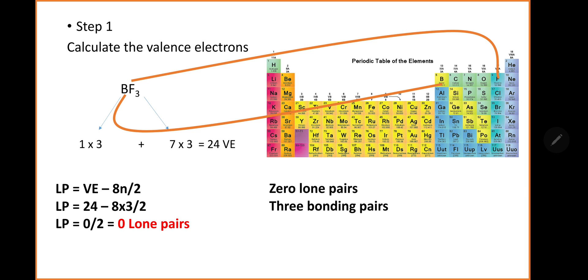Certain atoms are exceptions to the octet rule. They do not have to have an octet. They are stable with 6 electrons or 3 bonding pairs, and boron happens to be one of them.